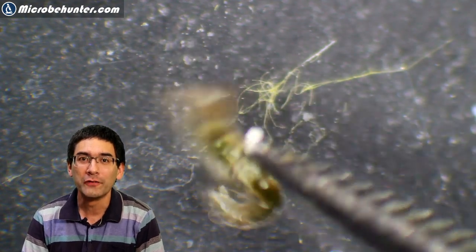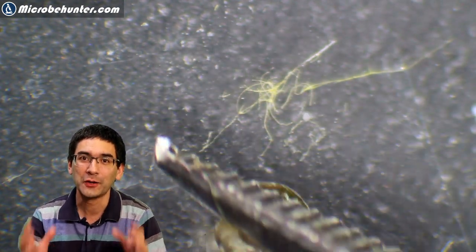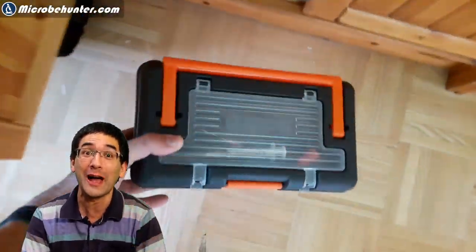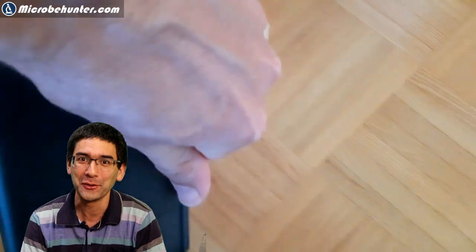This is the larva of a mosquito. I got it from pond water, and today I'm going to show you how I collected it and how I put it under the microscope.